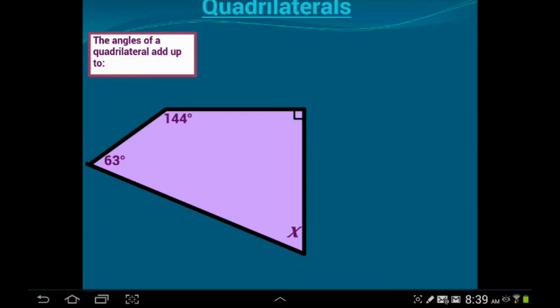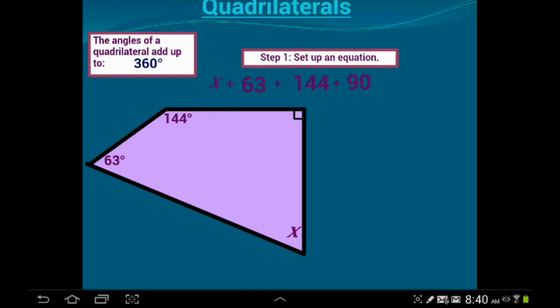No matter what kind of quadrilateral we're talking about, it will always have 360 degrees. So what we're going to do is we're just going to set up an equation and put all these terms together. Here's x, and then we're going to add 63, and then 144, and then 9. And then what we're going to do is we're going to set that equation equal to the number of degrees in a quadrilateral, which is 360,